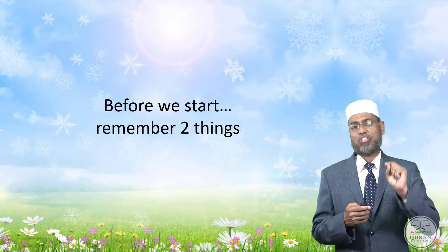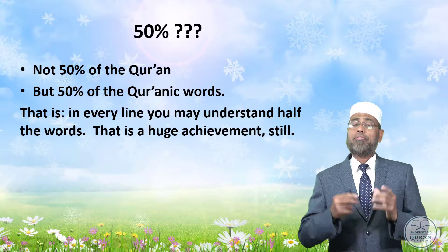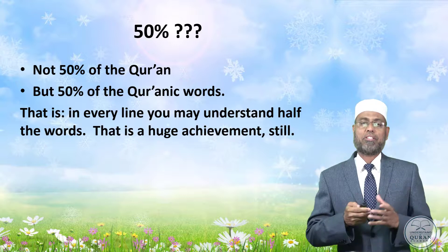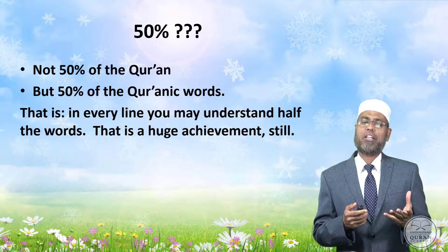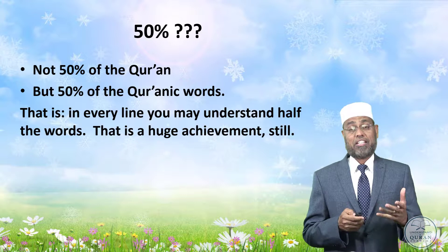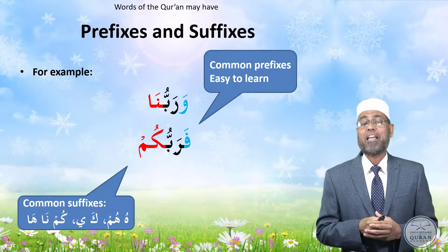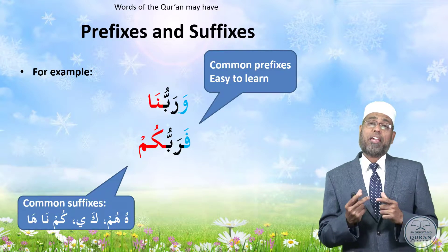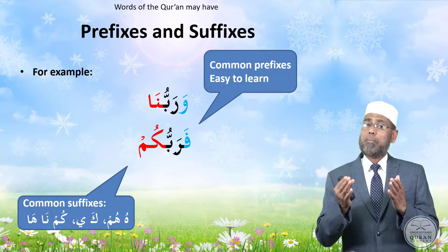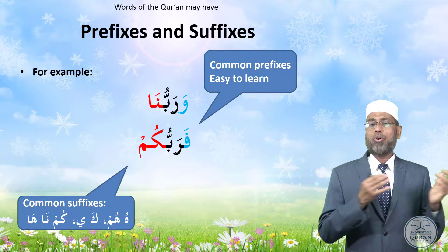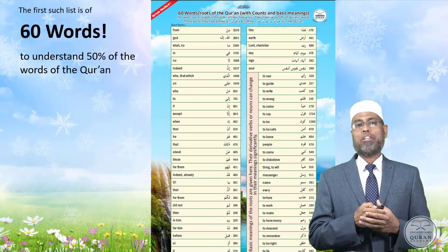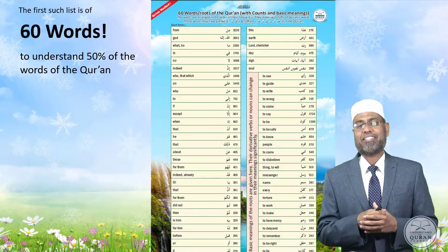Before we start, notice two things. We are talking of 50% of the words of the Qur'an, not 50% of the Qur'an. So in every line, inshallah, you will understand almost half of the words, but that is still a huge achievement. The second thing is that words may have prefixes and suffixes — like 'wa rabbu na' or 'fa rabbukum' — so there are prefixes and suffixes that you have to learn when working with these lists.